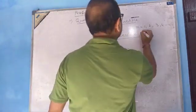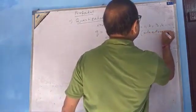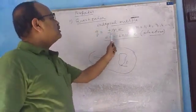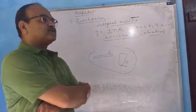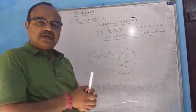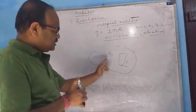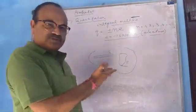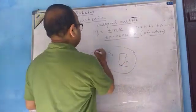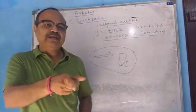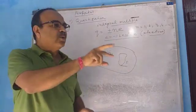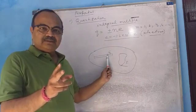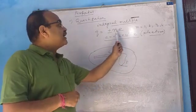Why is this so? Because in the rubbing process, electrons are transferred one by one: 1 electron, 2 electrons, 3 electrons — giving charges of 1e, 2e, 3e, and so on. So by whatever amount a body is positively or negatively charged, it is always an integral multiple of the electronic charge. These three are very important properties of charges.